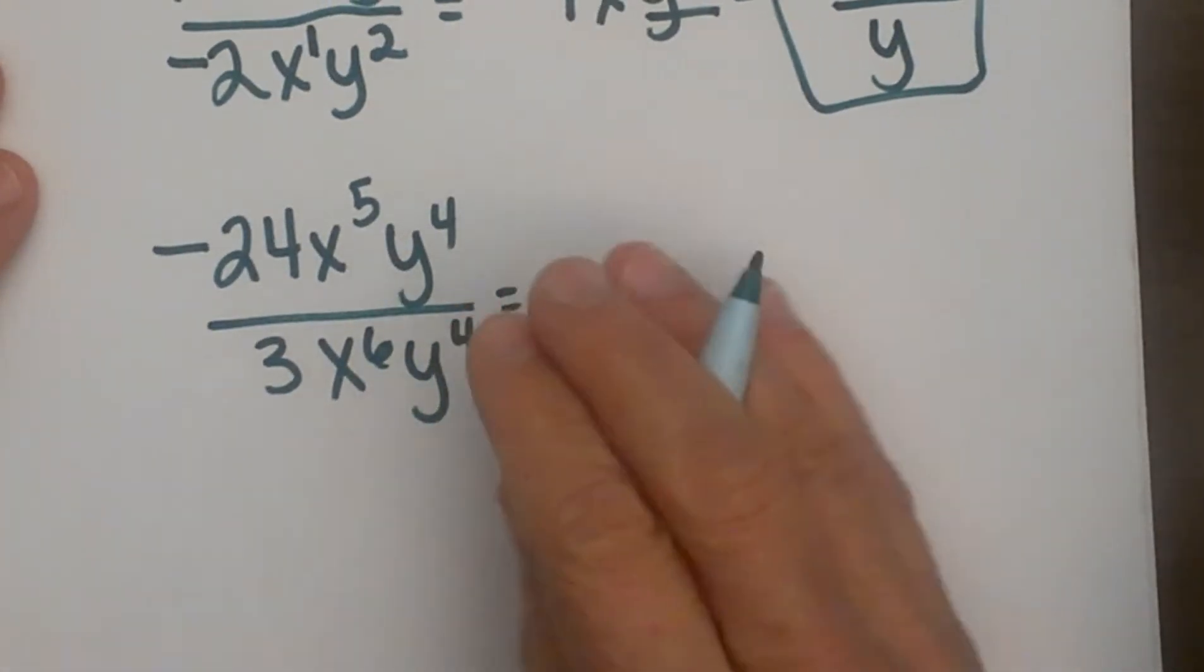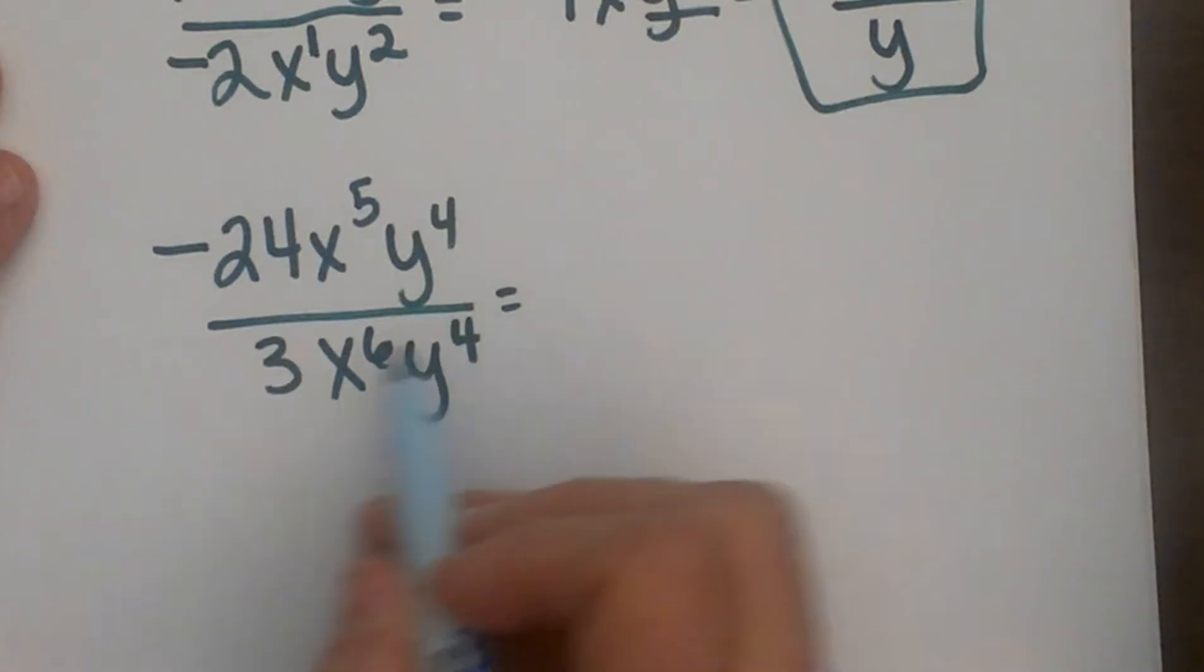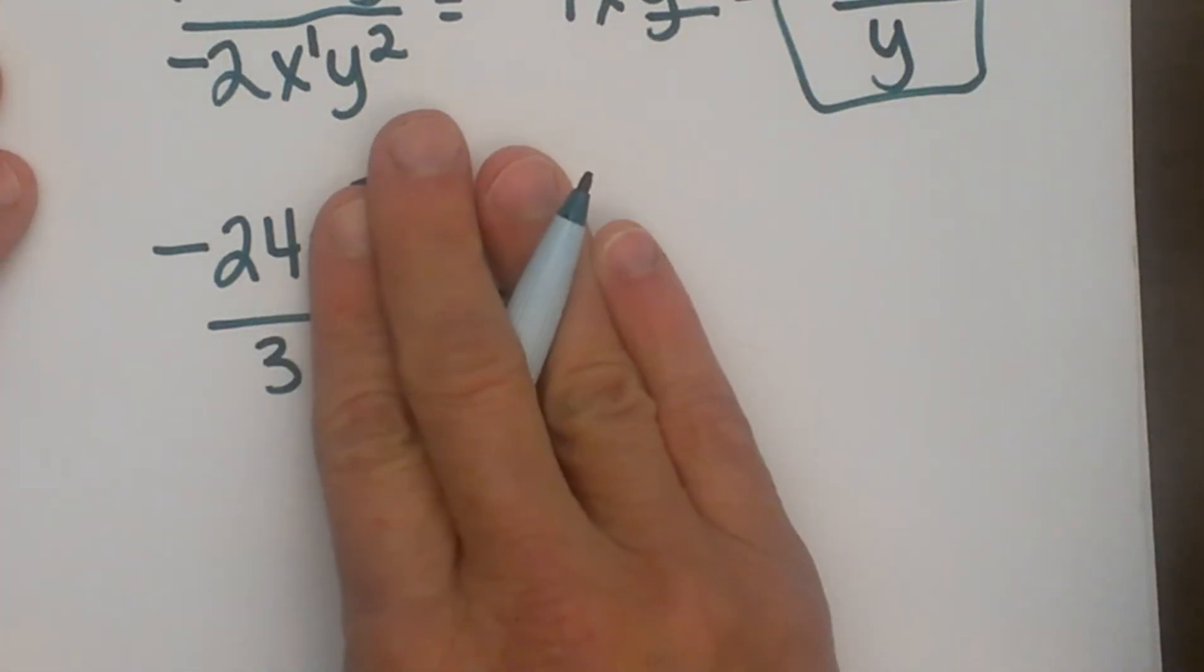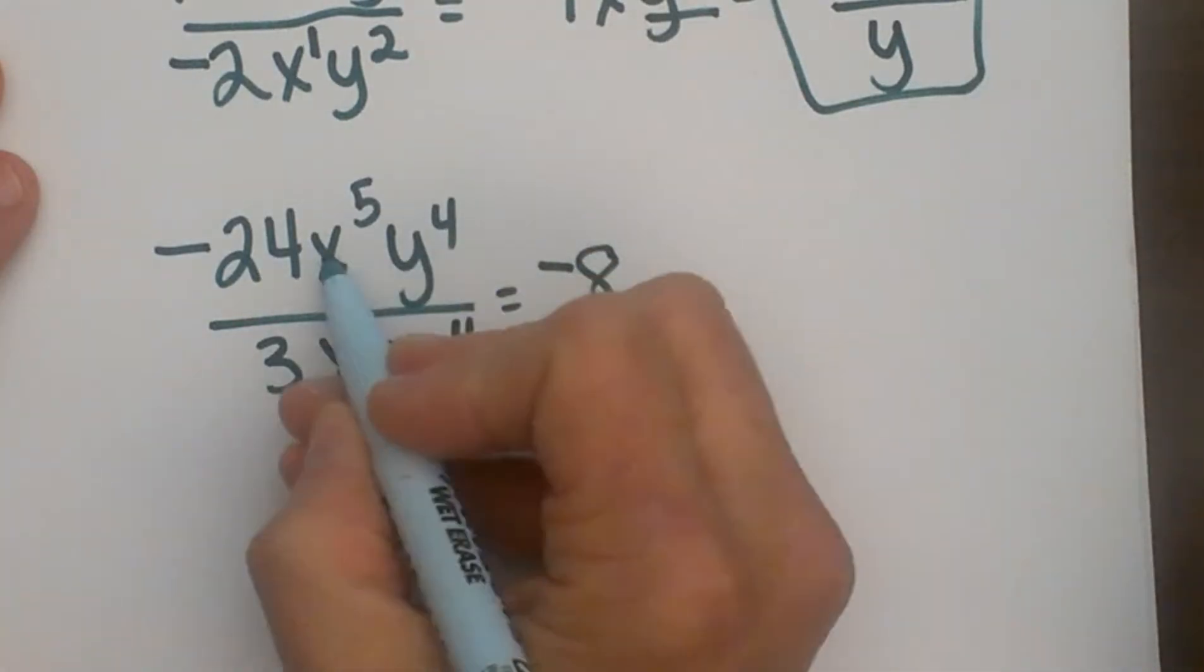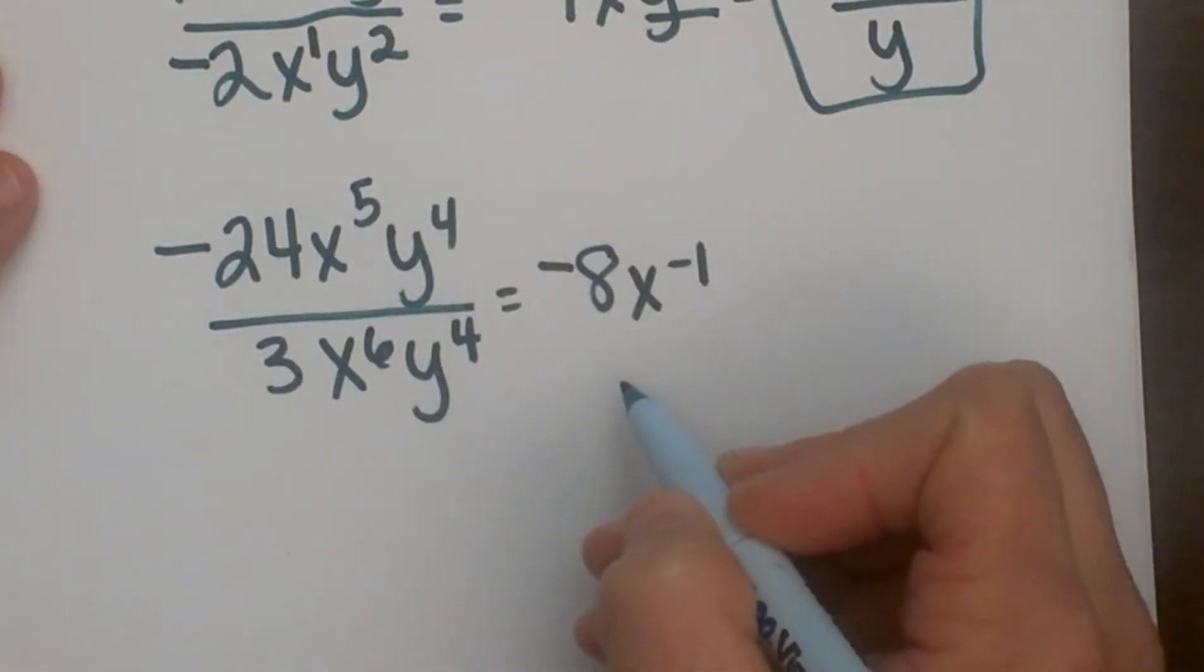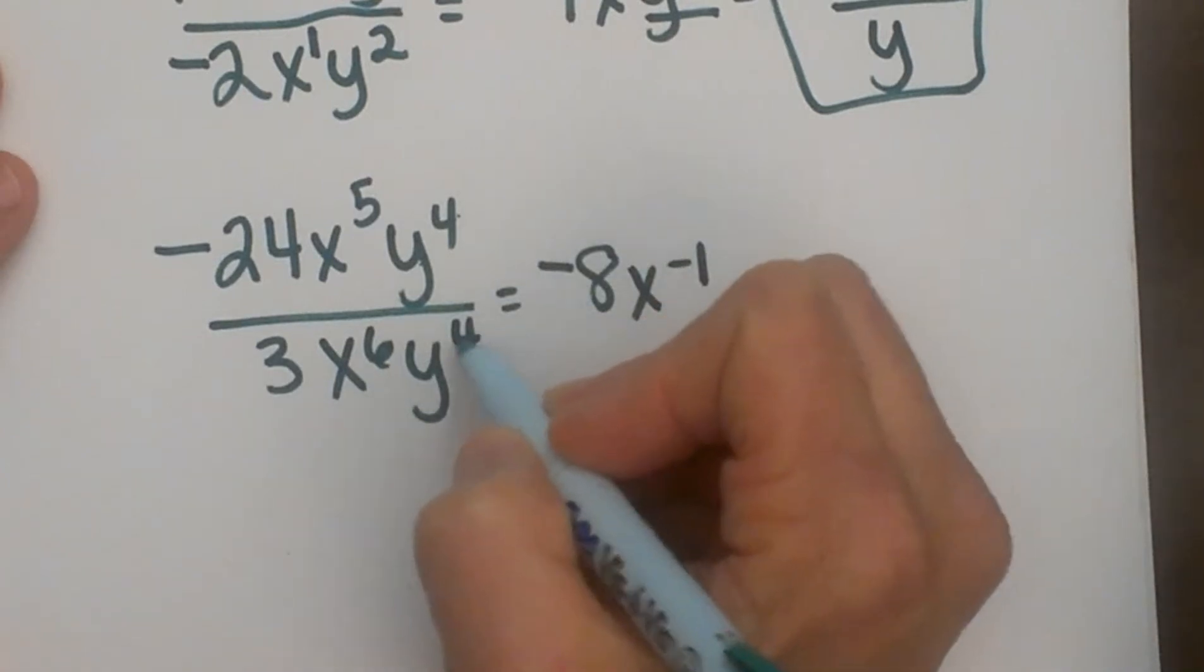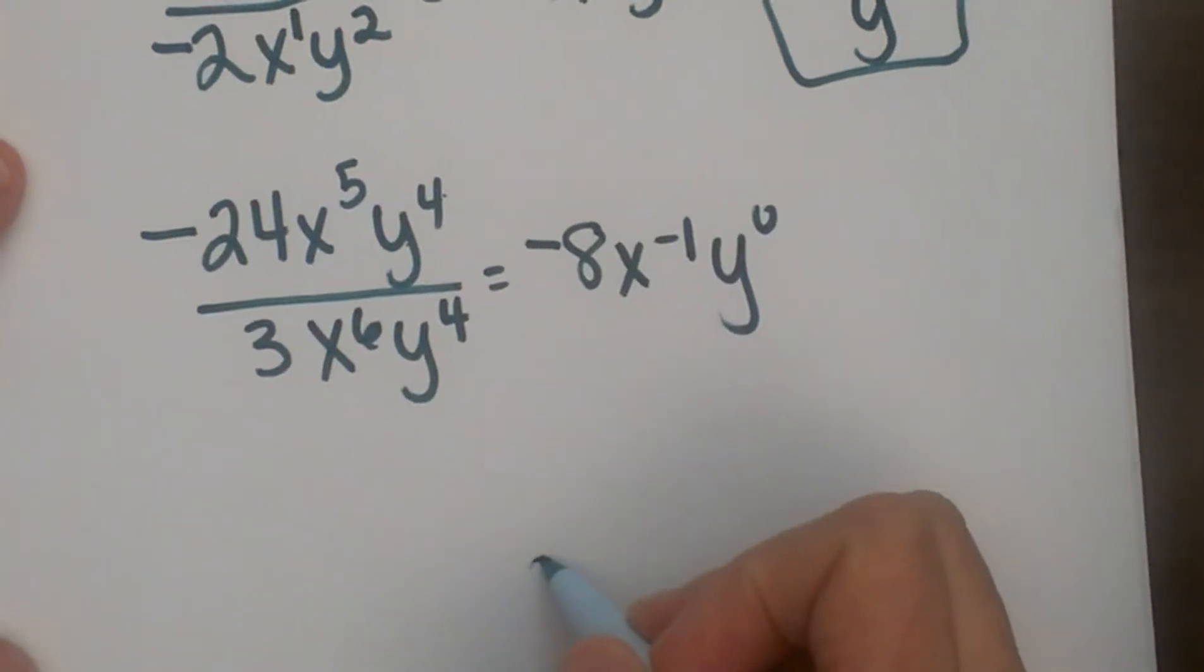This next one, we have negative 24x to the fifth and y to the fourth, all divided by 3x to the sixth and y to the fourth. One at a time, let's take coefficients: 24 divided by 3, that is negative 8. x to the fifth divided by x to the sixth is x to the negative first, 5 minus 6 is negative 1. And then y to the fourth divided by y to the fourth is y to the zero, because we don't have anything left. So now let's clean this one up.